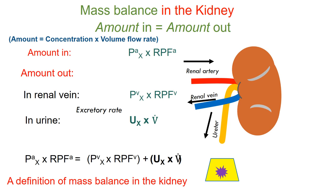The moment we look at this equation, we realize a problem — it is relatively complex to work with. In order to use this equation to measure mass balance, we need to know the renal plasma flow in both the artery and the vein. It is not impossible to get these values, but it is most cumbersome, and many people, especially physicians, will not use this approach.